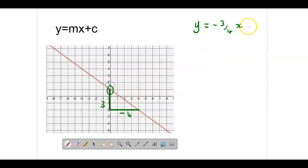Now it could be that a lot of people don't like writing the negative at the start, so you might also see this rearranged to be one take away three quarters of x.